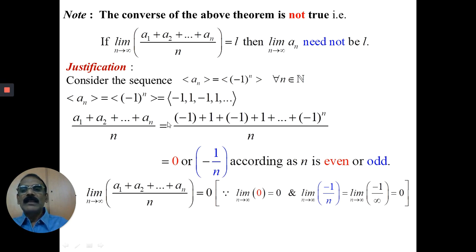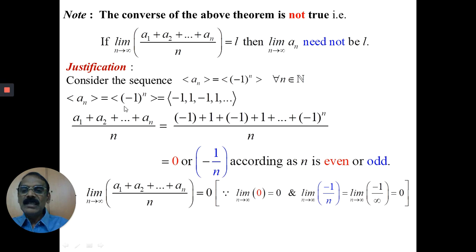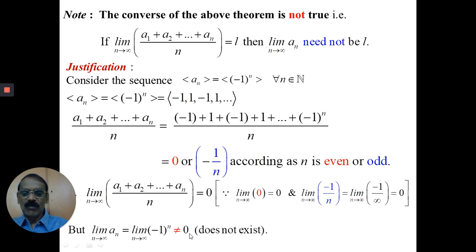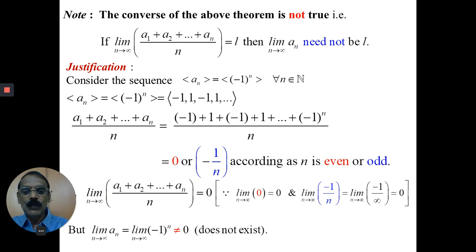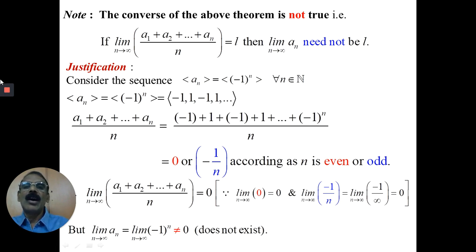Now, if the converse statement were true, then the limit of a_n as n tends to infinity must also be 0. But what is the limit of a_n? It is not 0, because the limit does not exist — it gives two limiting points, -1 and +1, and the limit must be unique. Since the limit does not exist, the converse of Cauchy's first theorem is not true.